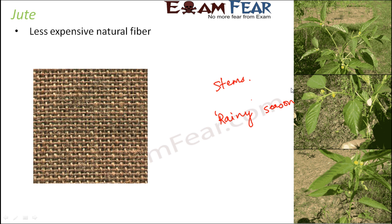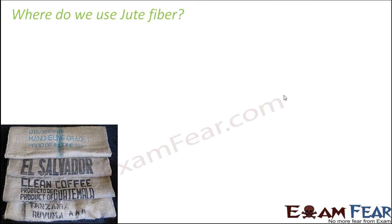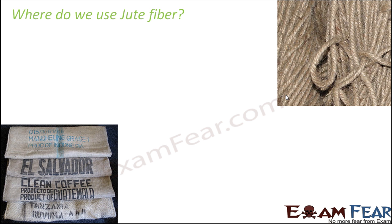Jute is very commonly grown in areas like West Bengal, Bihar, and Assam in India because they have plenty of rain. Where do we use jute fibers? It has a huge variety of applications. It is used in making sacks for storing coffee, tea, or similar goods — the bigger bags used for storage. It is also used to make jute ropes, as they are quite strong and coarse.